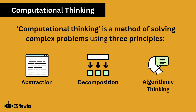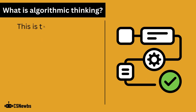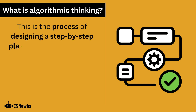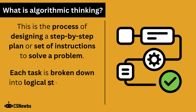Algorithmic thinking is one of the three principles of computational thinking, which are used to solve complex problems. Algorithmic thinking is the process of designing a step-by-step plan or set of instructions to solve a problem. Each task is broken down into logical steps that can be followed.